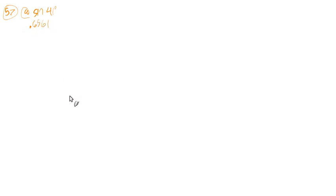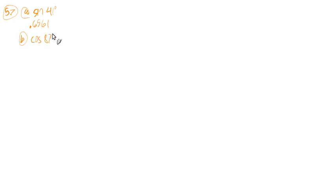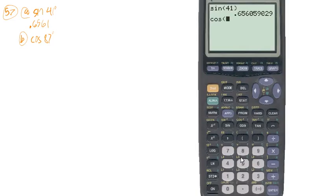The answer is 0.6561. Part B wants us to find the cosine of 87 degrees. We know it's still in degree mode, so cosine of 87 is 0.0523.